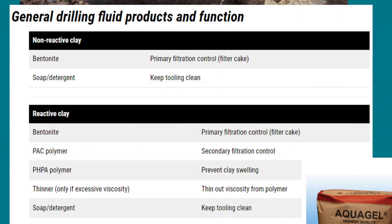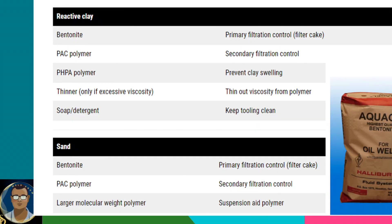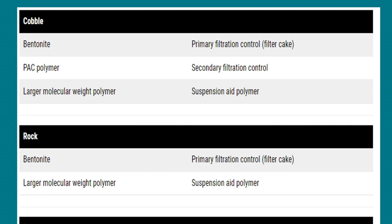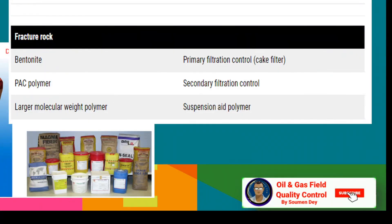If the soil is non-reactive clay, bentonite is used as primary filtration control and soap and detergent keep the tooling clean. If it is reactive clay, then bentonite, PAC polymer, PHPA polymer, thinner, and soap or detergent are used. If it is a sandy area, bentonite, PAC polymer, and larger molecular weight polymer are used. In cobalt-type soil, bentonite, PAC polymer, and larger molecular weight polymer are used. In rocky areas, bentonite and larger molecular weight polymer are used, including for fractured rock.